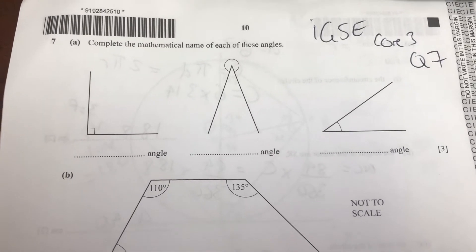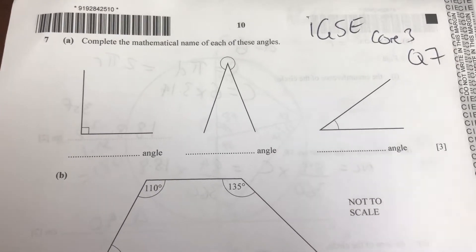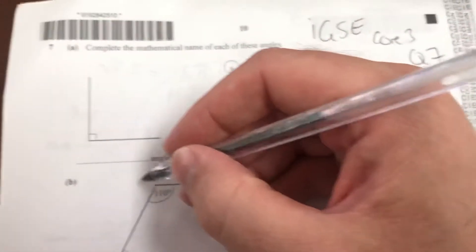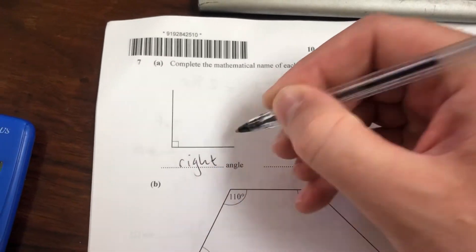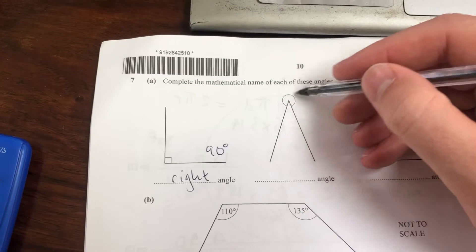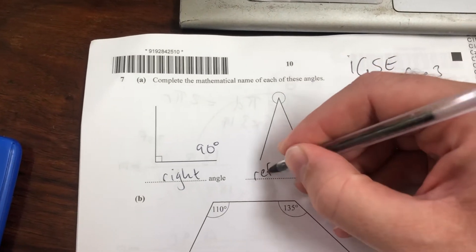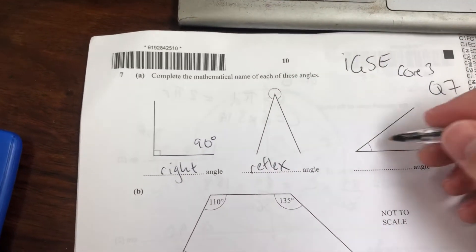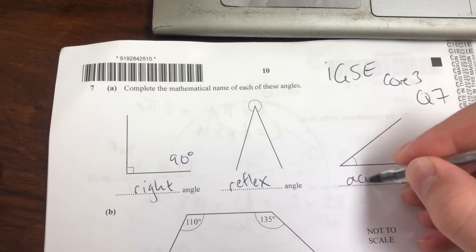We're going to complete the mathematical name of each of these angles. This one is a right angle, we know that by the little square which means 90 degrees. This angle here is going all the way around, so it is reflex. This one here is very small, it is an acute angle.